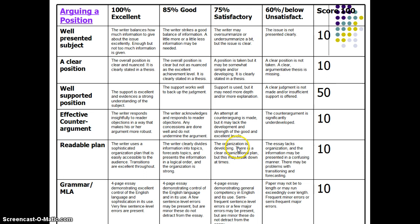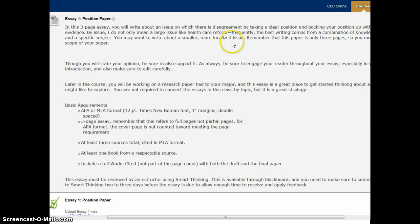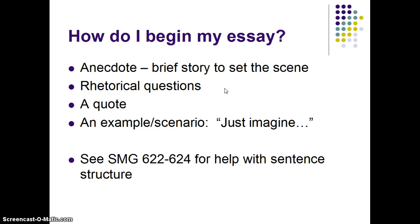A copy of the rubric is provided in the PowerPoint so you can see how the assignment will be graded. The last 10% covers grammar, spelling, and MLA format. Looking at the prompt one more time: three-page paper on an issue with disagreement, MLA format, three sources with at least one book. Some ideas for how to start your essay include telling a story, asking questions, using an interesting quote, or setting a scenario. The St. Martin's Guide has helpful pages for this as well.